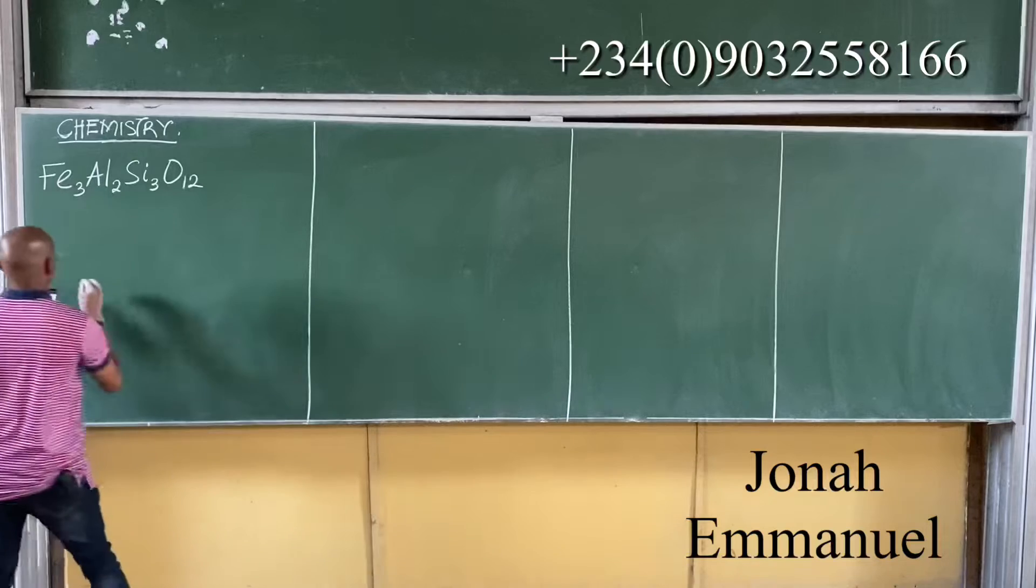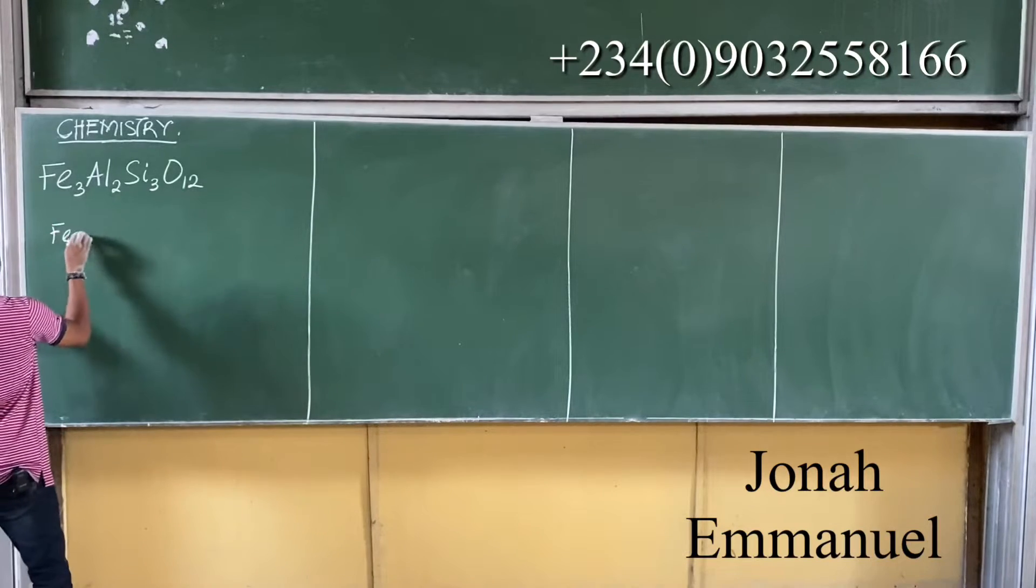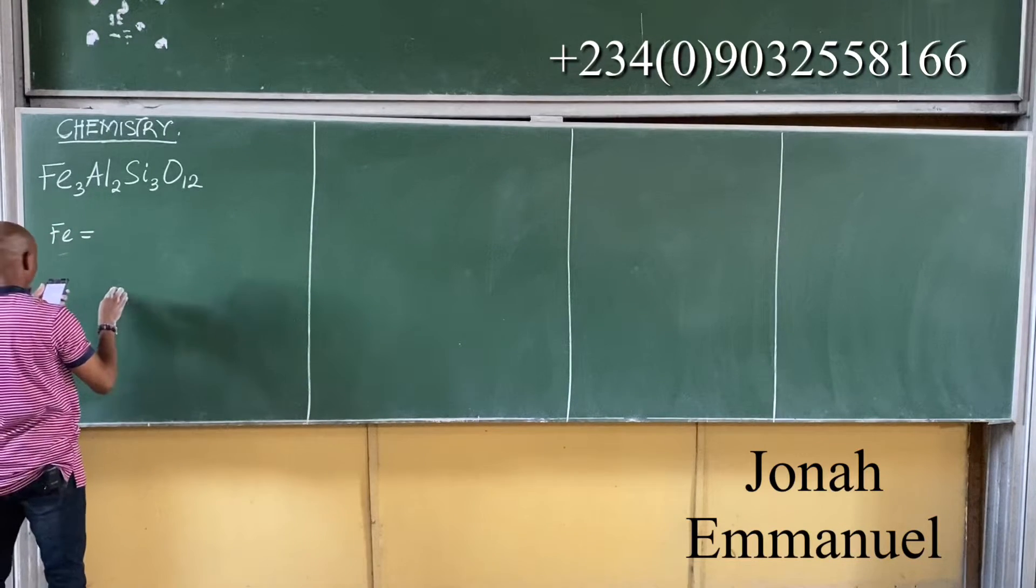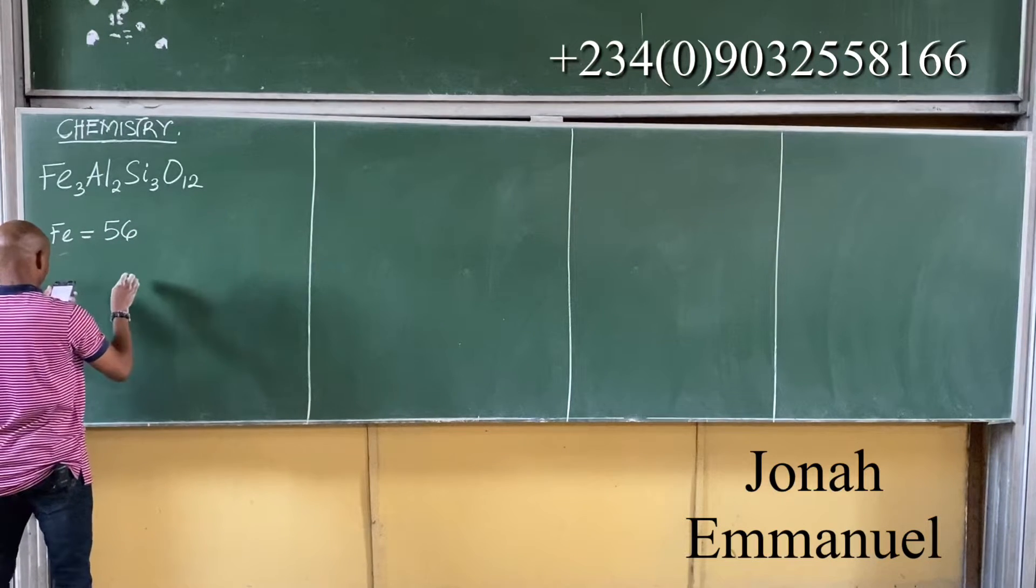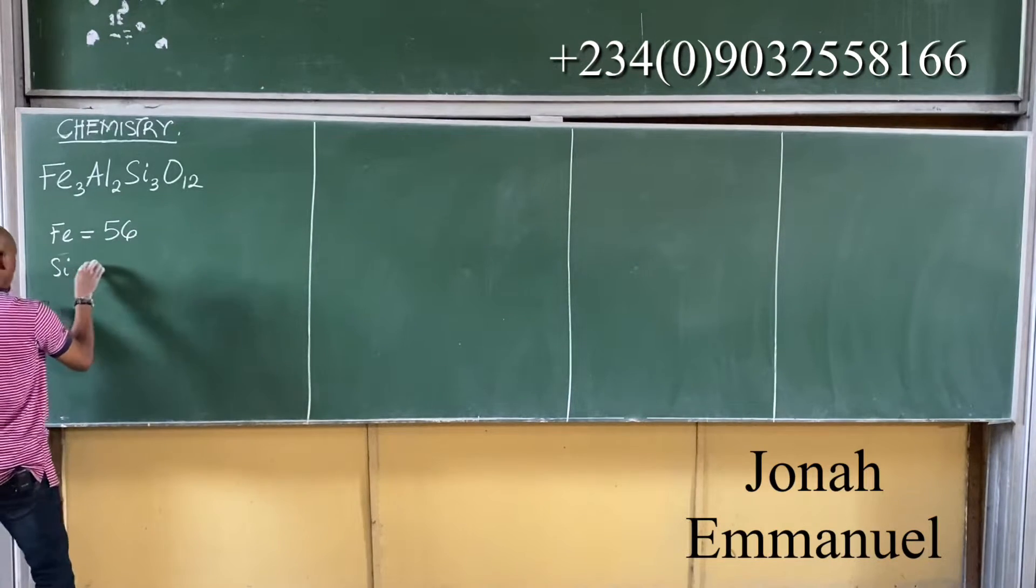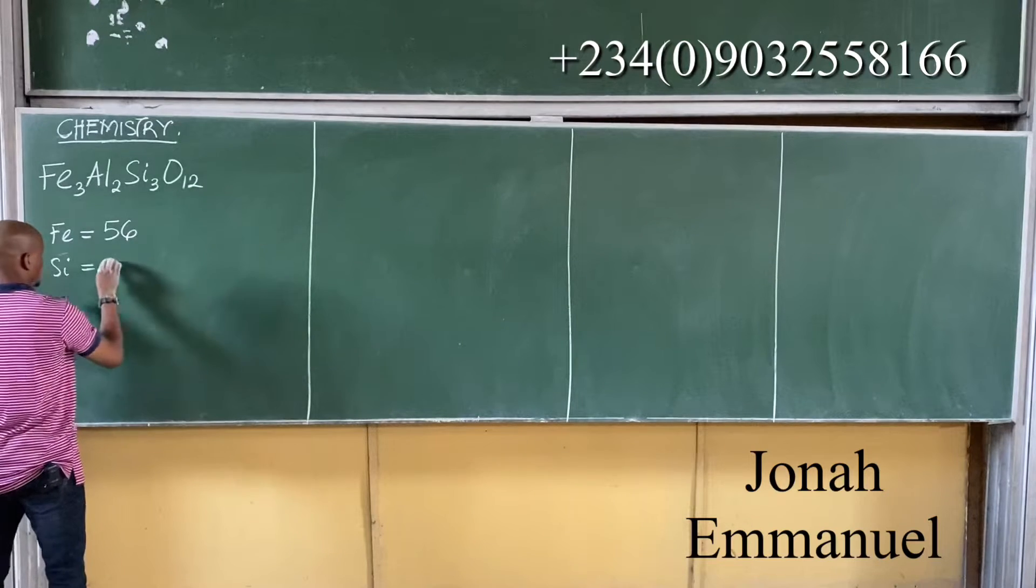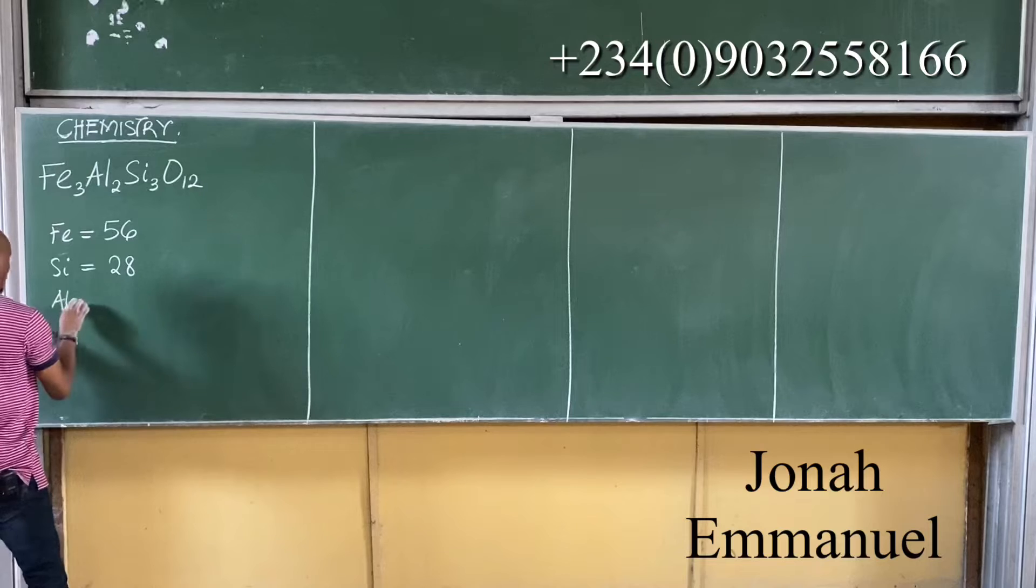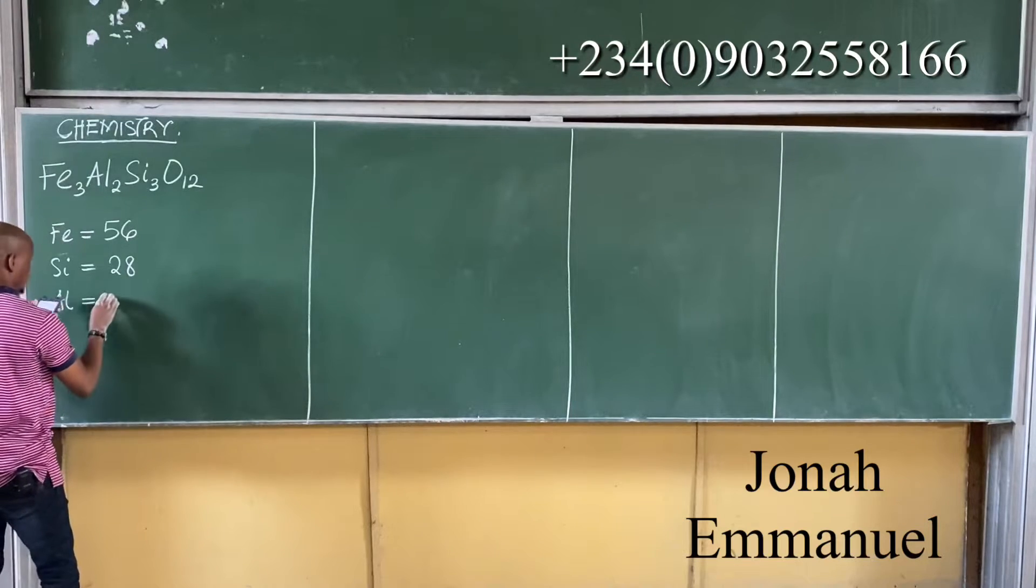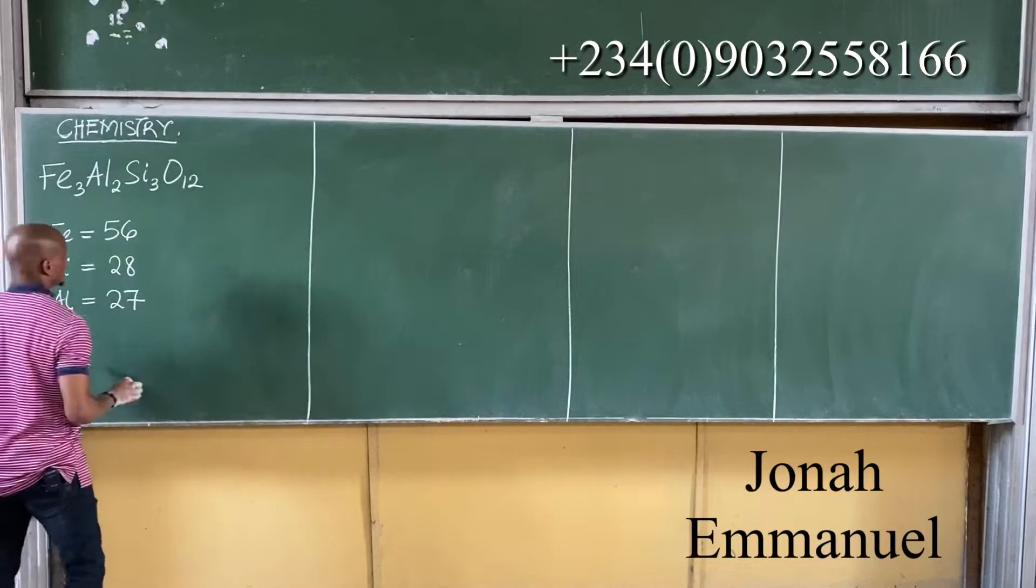The iron should be taken as 56, silicon is 28, then aluminum is 27.